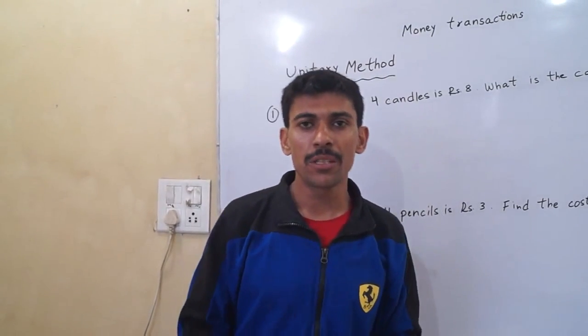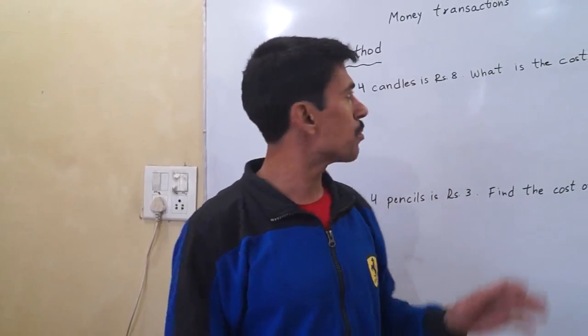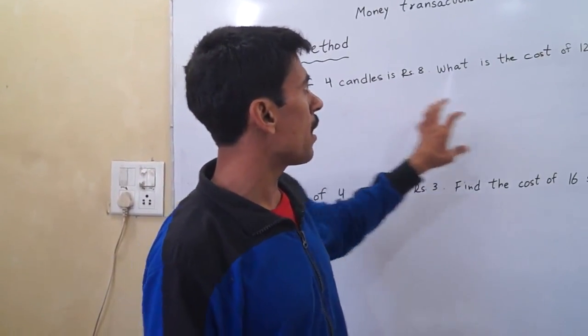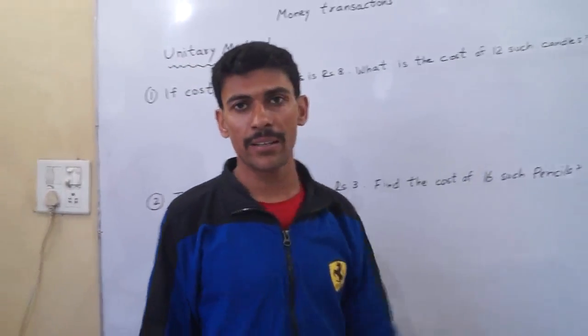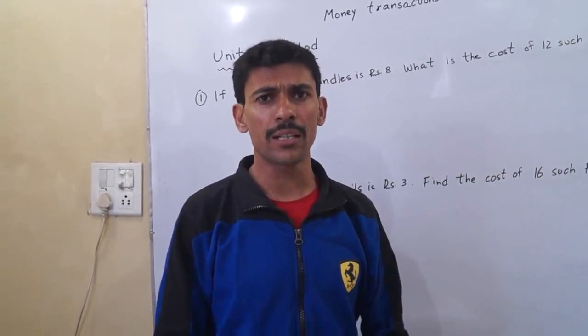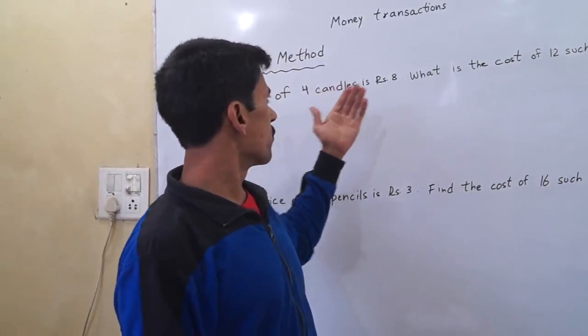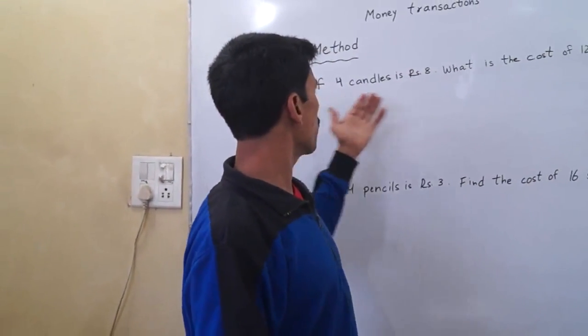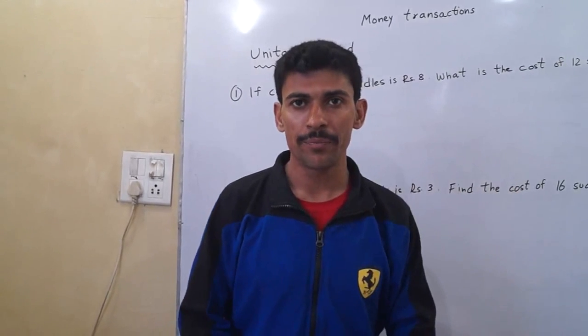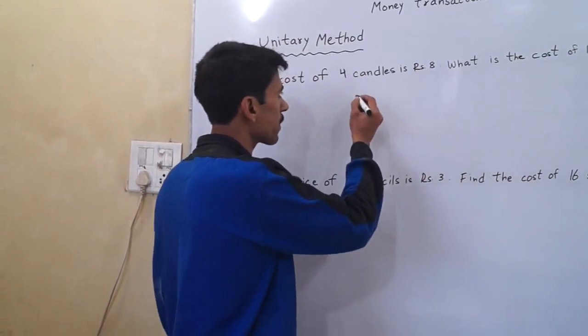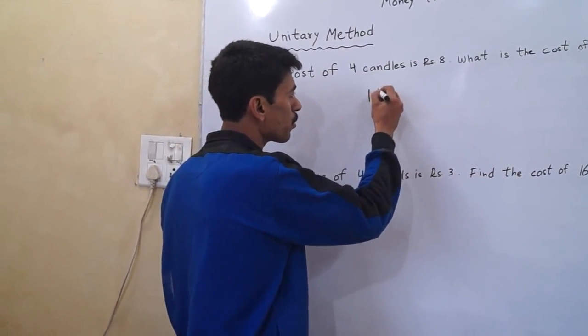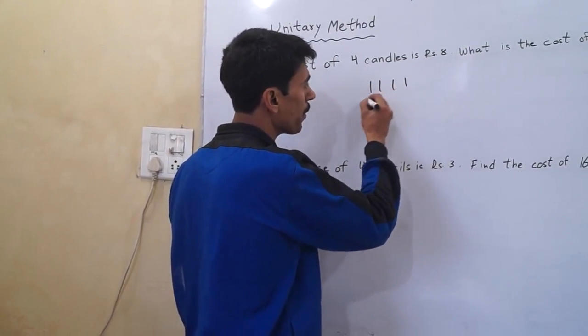Hello dear friends, today we will teach you how to calculate the cost of 12 candles. We have given the cost of four candles is rupees 8. This is the candles: one, two, three, four.